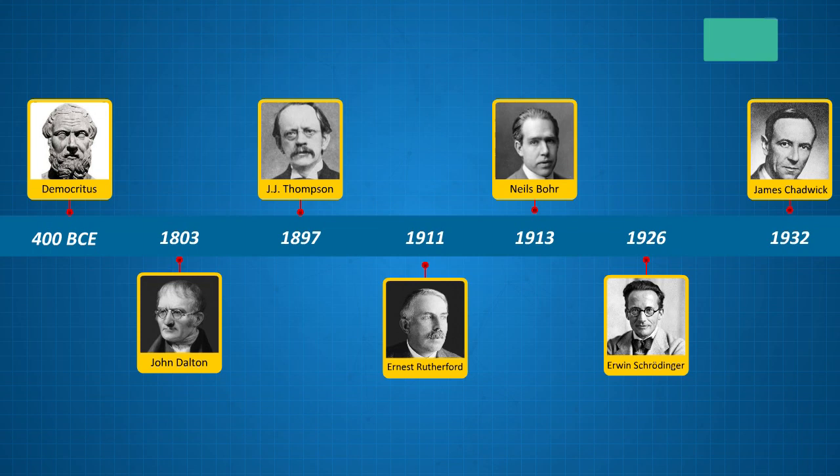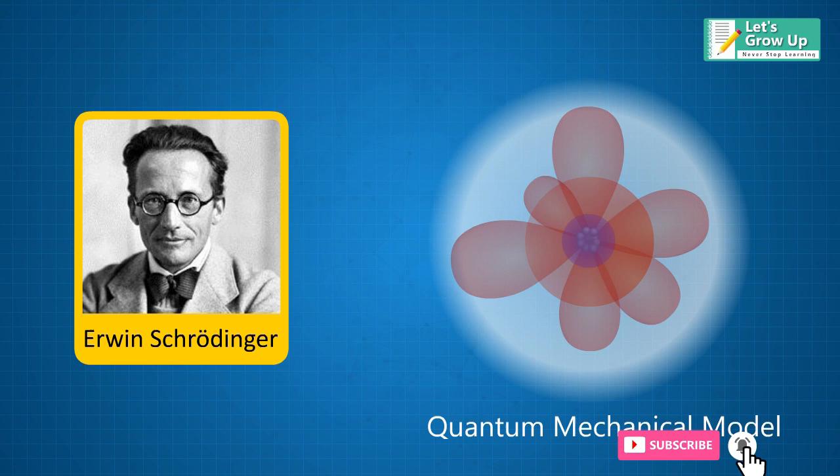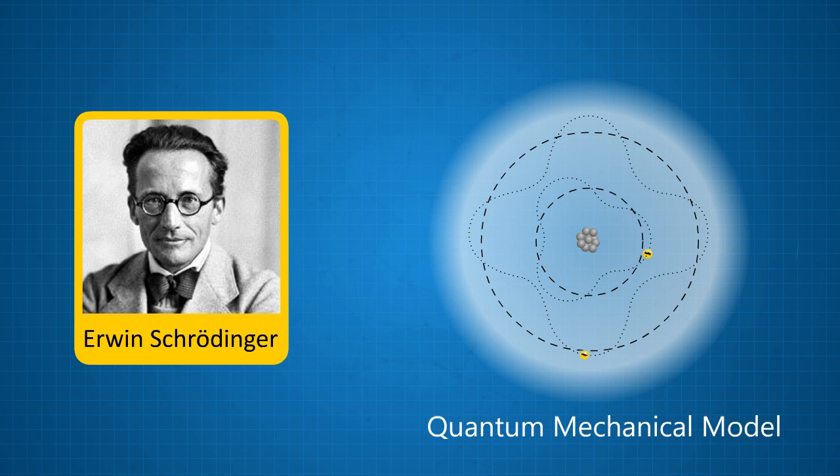In 1926, Erwin Schrödinger, an Austrian physicist, upgraded it and founded the quantum mechanical model of the atom. He observed that the electrons were not particles but waves. He did this by mathematically stating that the possibility of finding an electron at a specific position inside the atom was uncertain.